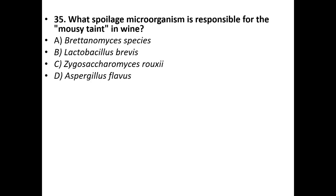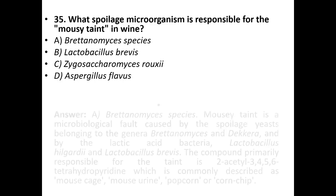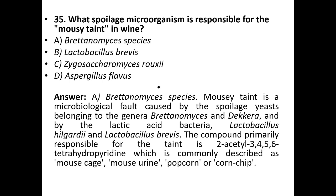Thirty-fifth question: what spoilage microorganism is responsible for the mousey taint in wine? A: Brettanomyces species. B: Lactobacillus brevis. C: Zygosaccharomyces. D: Aspergillus flavus. Answer is A — Brettanomyces species. Mousey taint is a microbiological fault caused by spoilage organisms of the genera Brettanomyces and Dekkera, and by lactic acid bacteria like Lactobacillus hilgardii and Lactobacillus brevis. The compound primarily responsible is 2-acetyl-3,4,5,6-tetrahydropyridine, commonly described as mouse cage, mouse urine, popcorn, or corn chip.